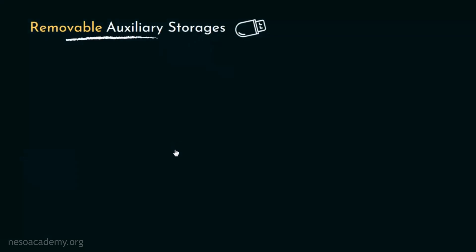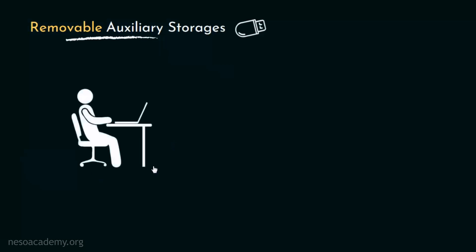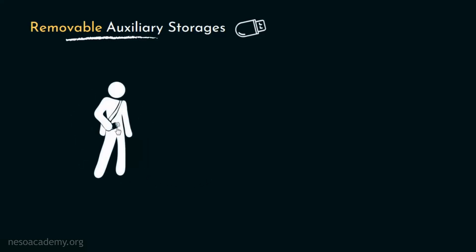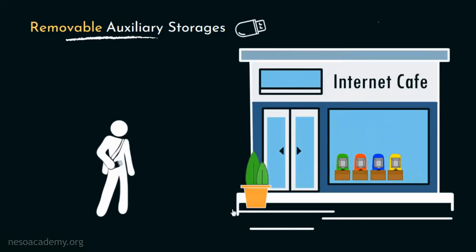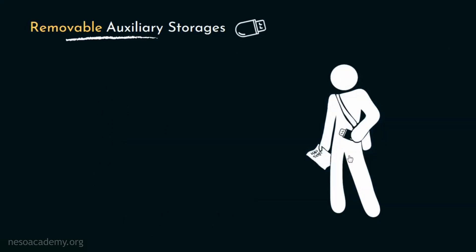For instance, suppose we have applied for an exam and the hall ticket has been provided to us through our email ID. Now in order to appear in the exam, we are to bring the physical copy of the hall ticket along with us. If we don't own a printer, usually we would take the digital copy of the hall ticket in a USB flash drive and go to a nearby internet cafe and get it printed. The sole purpose of the USB drive was to store the hall ticket's digital copy, and using it we could move the digital hall ticket from our machine to the cafe's machine — so it gave us portability as well.